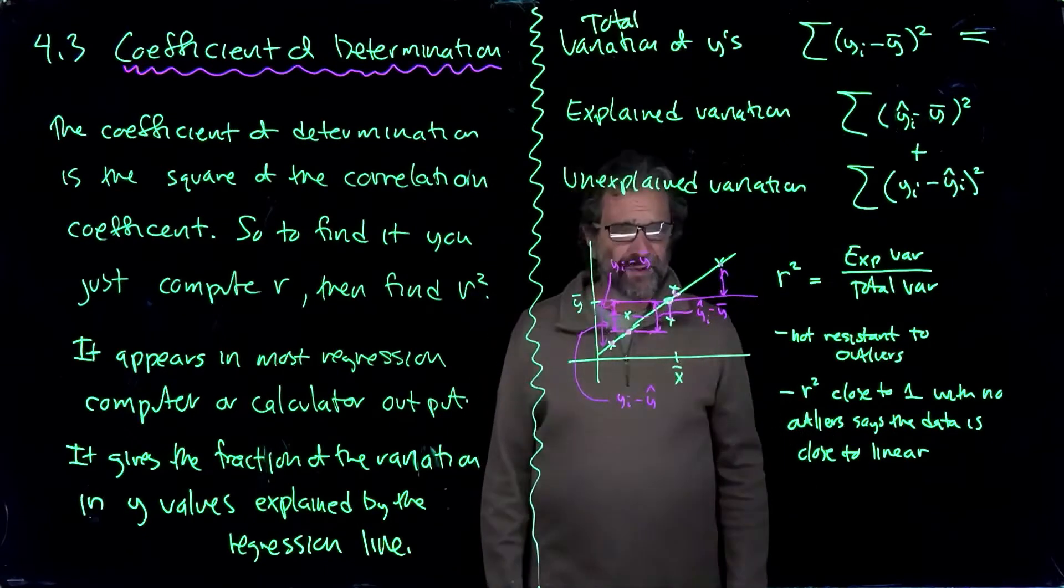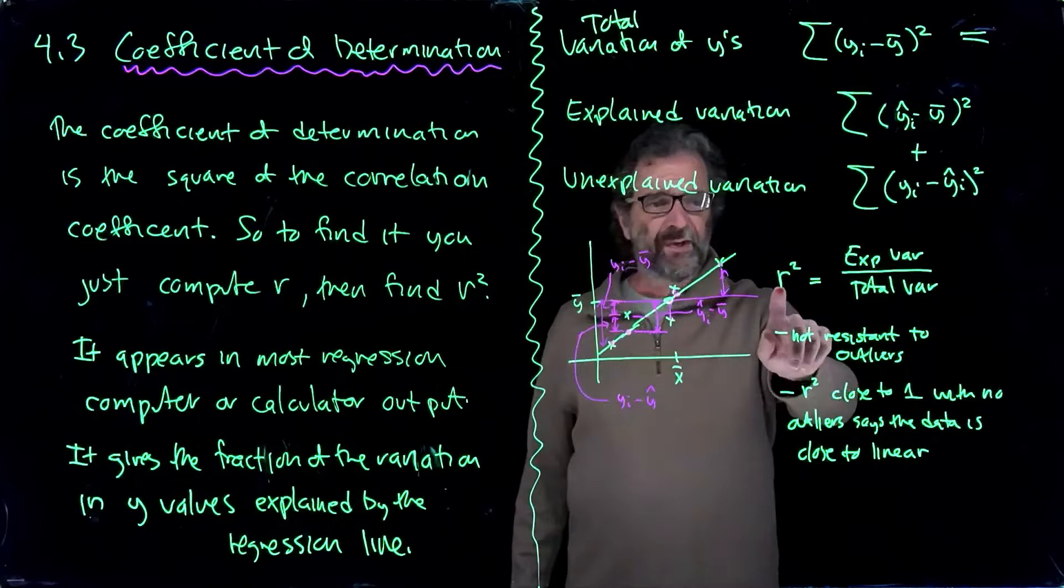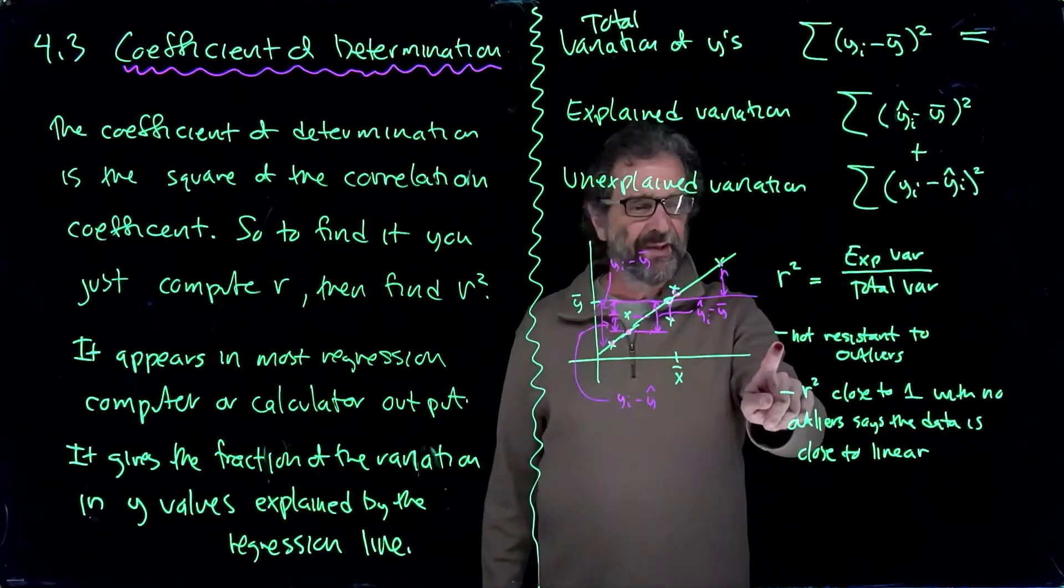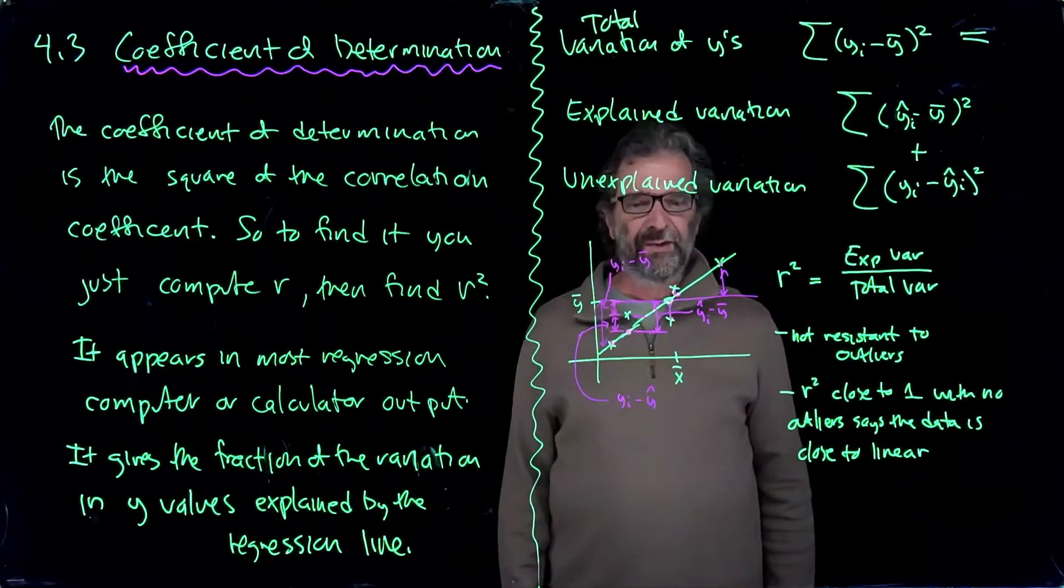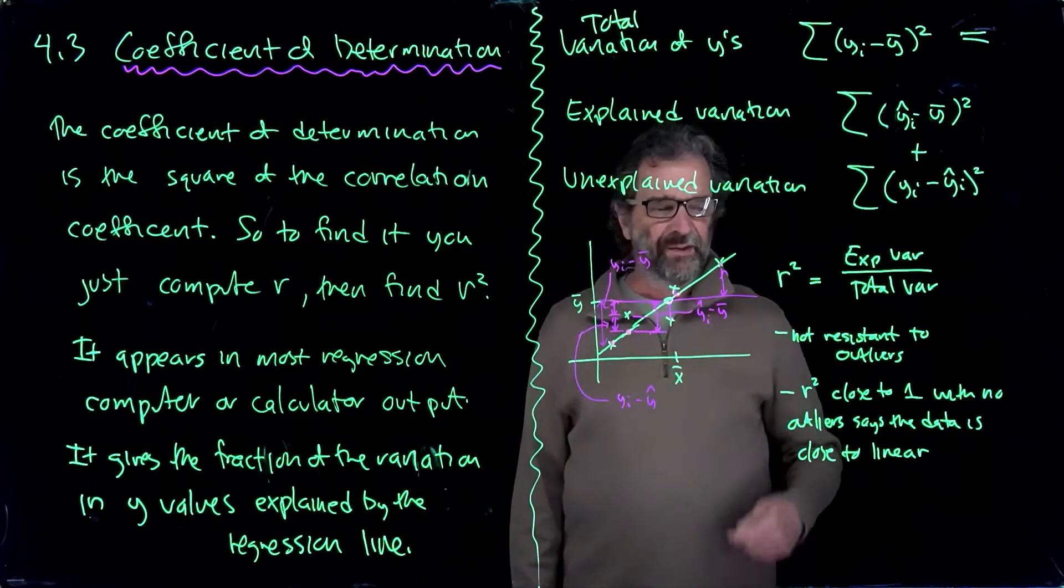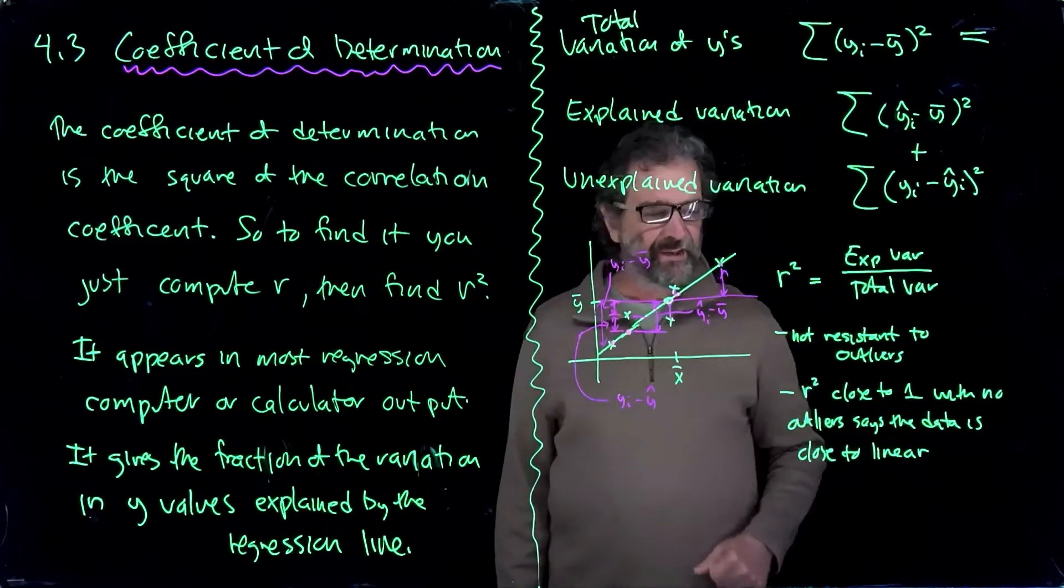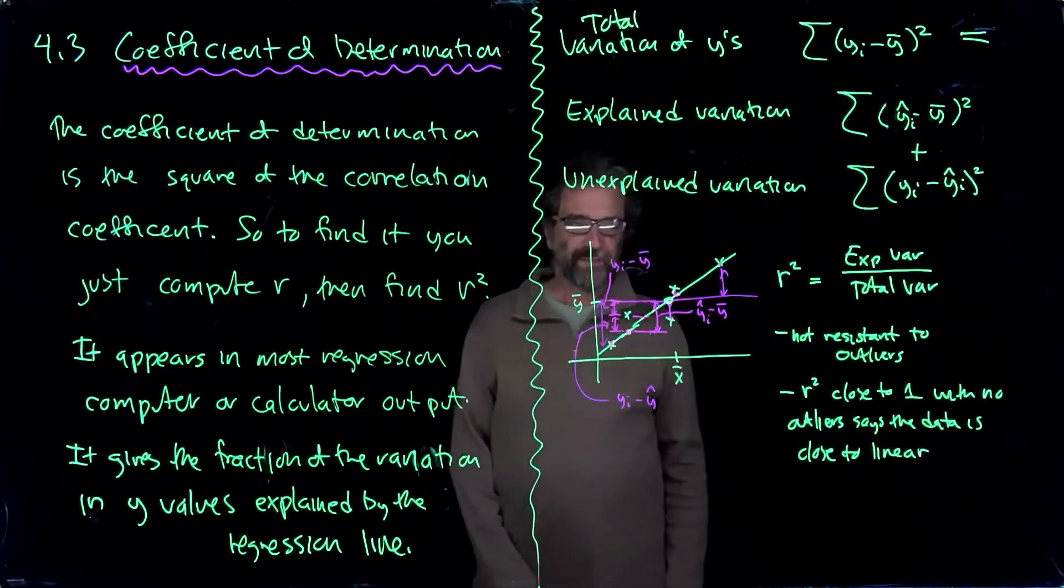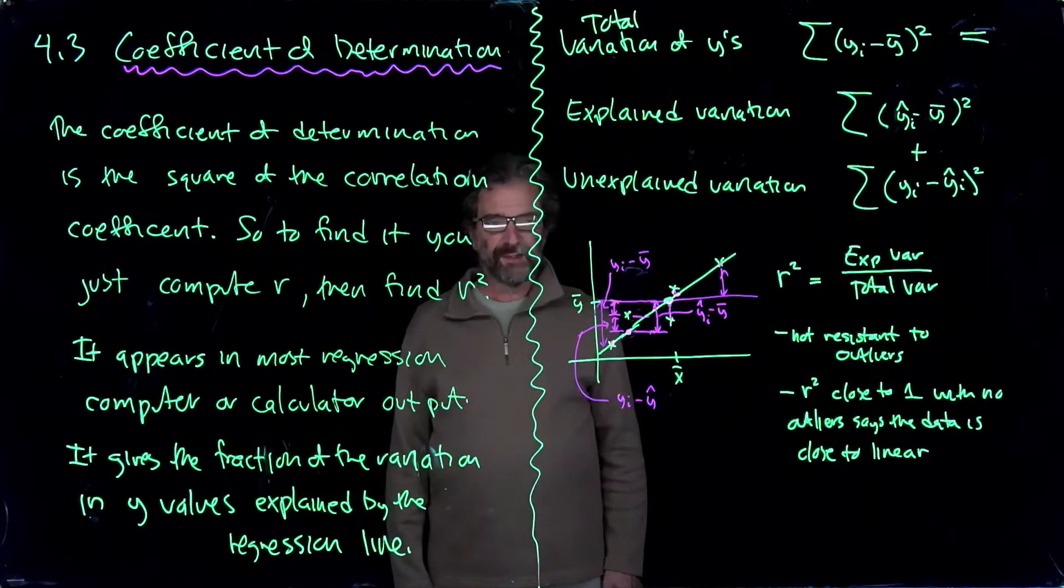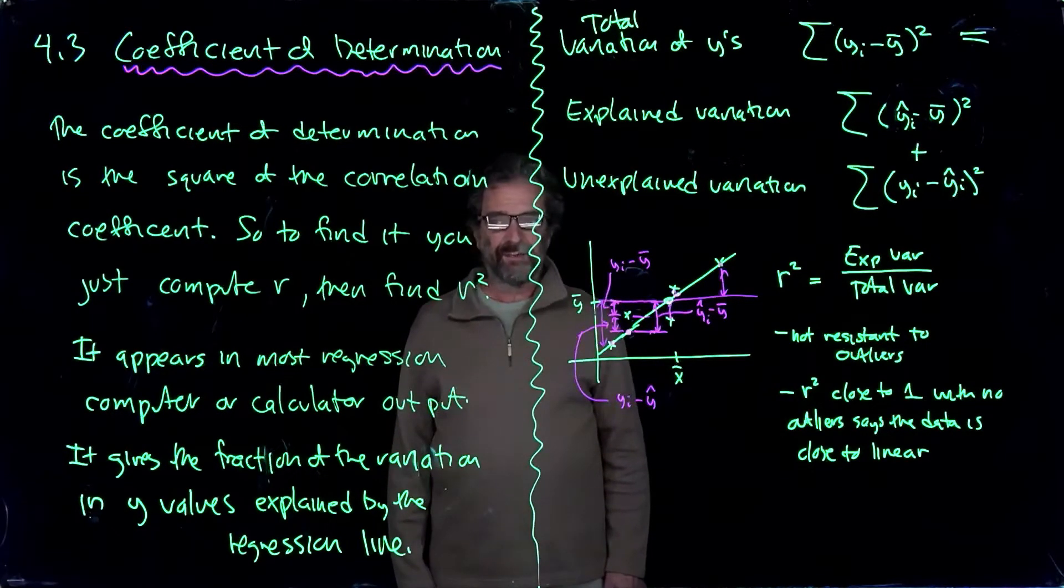And as usual, when we talk about correlation-based calculations, this R squared value that you see is not resistant to outliers. So you can get an R squared close to one just from one giant outlier and the rest of the data is not linear at all. So you have to be careful. R squared close to one with no outliers says the data is close to linear throughout. And that's what you're hoping to see if you have data that's supposed to be linear when you compute R squared, you should get a number close to one.